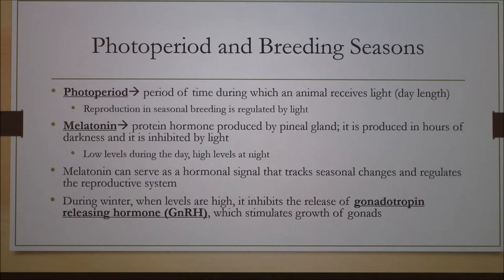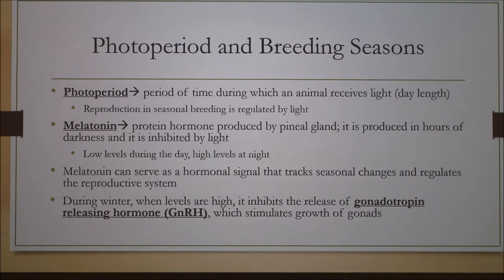Moving on to photoperiod and how it relates to breeding seasons. Photoperiod is the period of time during which an animal is exposed to light — generally speaking, the day length. Melatonin is a protein hormone produced in the pineal gland. It is known as the hormone of darkness because it is produced during hours of darkness, since it is inhibited by light.